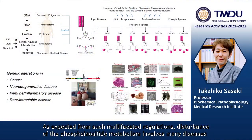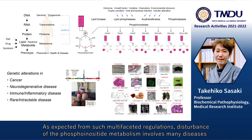As expected from such multifaceted regulations, disturbance of the phosphoinositide metabolism involves many diseases ranging from rare genetic disorders to more common ones such as cancers, neuronal diseases, and immune diseases.